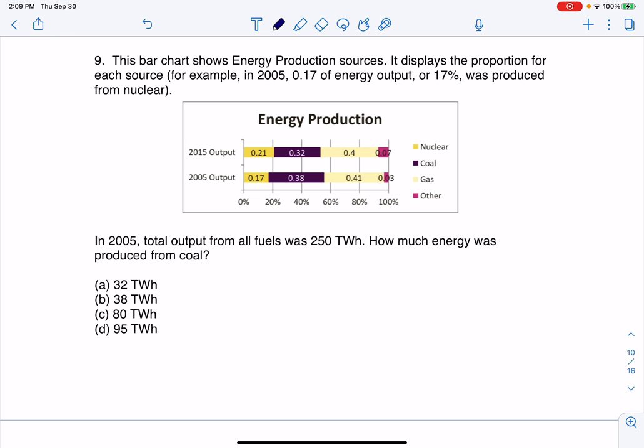And it says in 2005, the total output from all fuels was 250 TWH. And I'm not even sure what TWH stands for, maybe like total wattage or something. But here are my units. This looks like a numerical variable. So my variable here is fuel output, right? It looks like output. And again, I'm not an expert on energy production, but I can still look at a graph and interpret it.